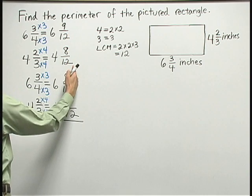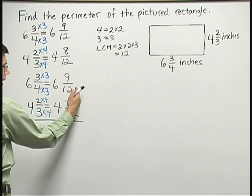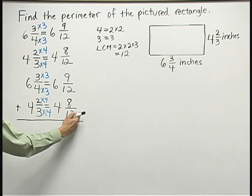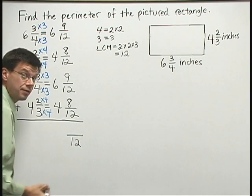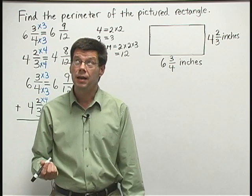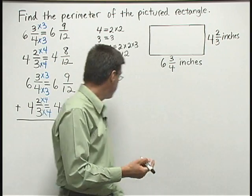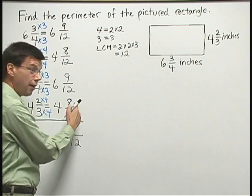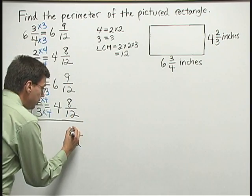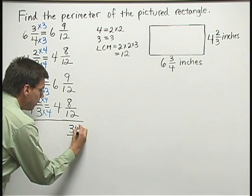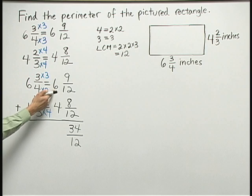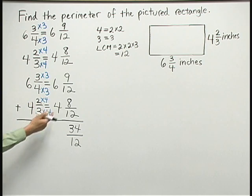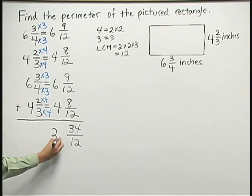Nine twelfths plus eight twelfths plus nine twelfths plus eight twelfths is going to be so many twelfths. Now nine and eight is seventeen, plus another nine plus another eight is thirty-four. Then I need to add the whole number parts here. Six plus four is ten, plus another six plus another four is going to be twenty.